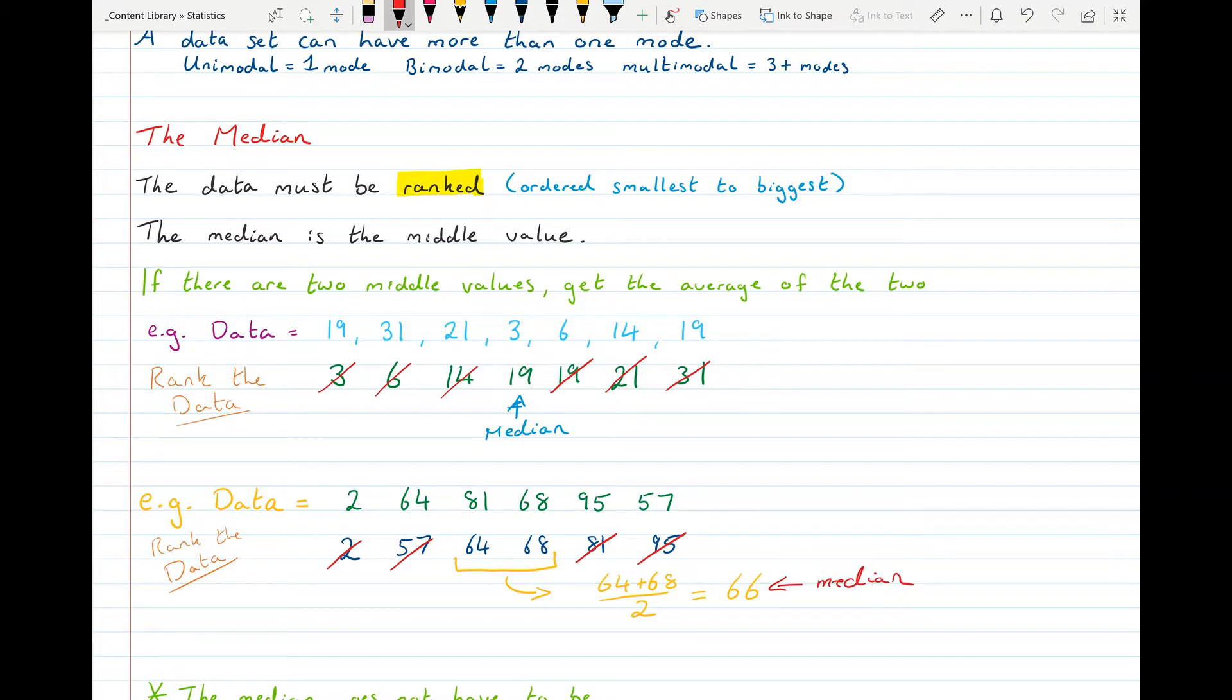Note how 66 isn't actually a value from the data set, but that's okay. The median is a figure that represents the middle of the data. So 66 will be the median.